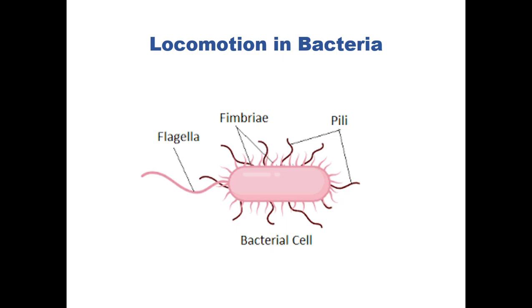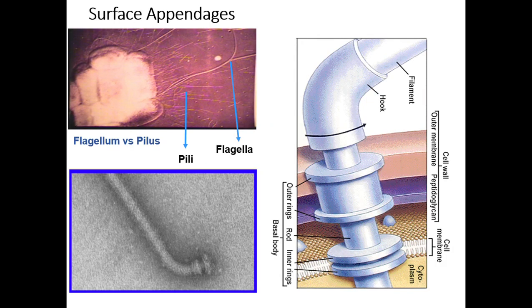The locomotion or movement in bacteria is mediated by different surface appendages of bacteria, which include flagella, pili, and fimbriae. If we look at the flagella and pili, the flagella are long and they are more rigid.